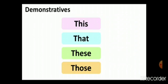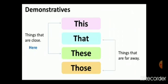Let's start. 'This', 'that', 'these', and 'those' — these words are called demonstrative words, and they are used to point out something. 'This' and 'that' are used for singular, and 'these' and 'those' are the plural demonstrative words. To point out things which are near or close to us, we use 'this' and 'these'. To point out things which are far away, we use 'that' and 'those'.